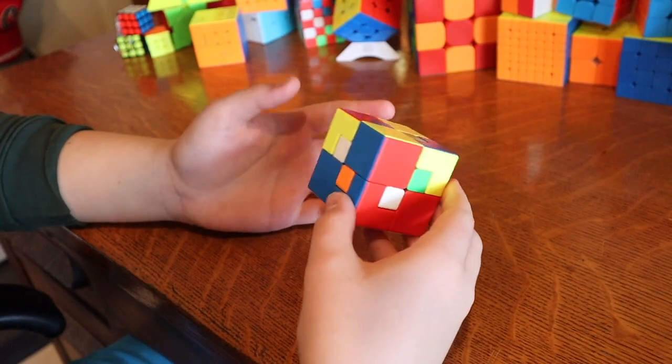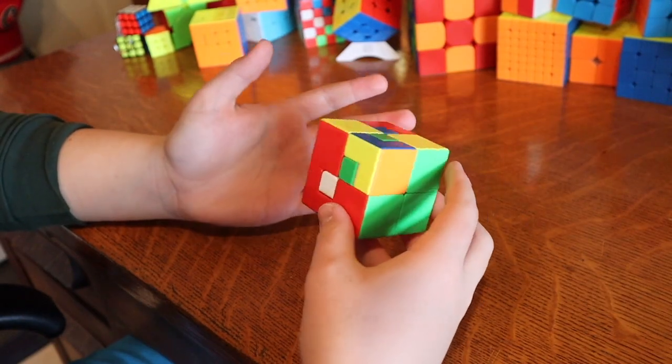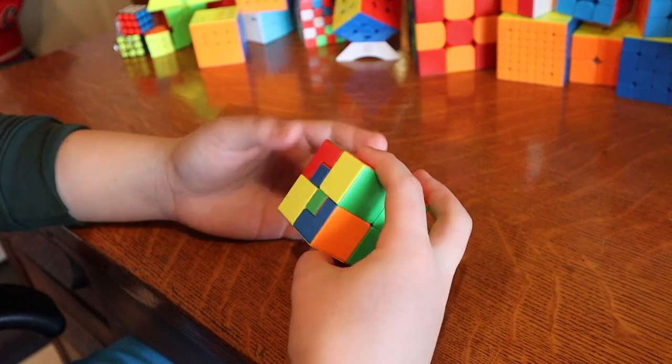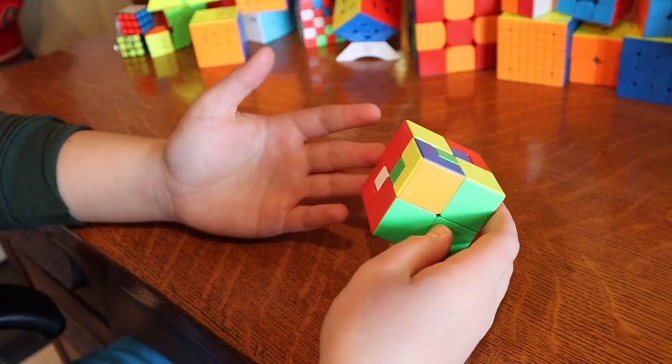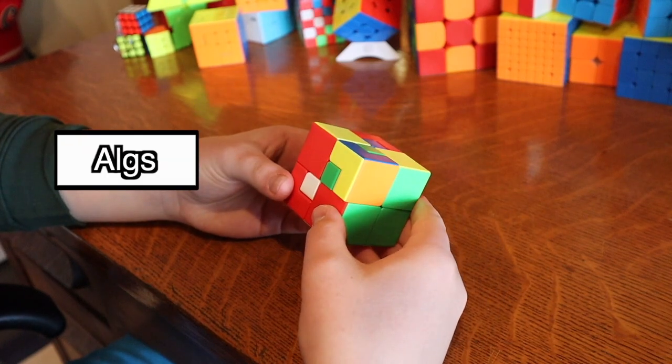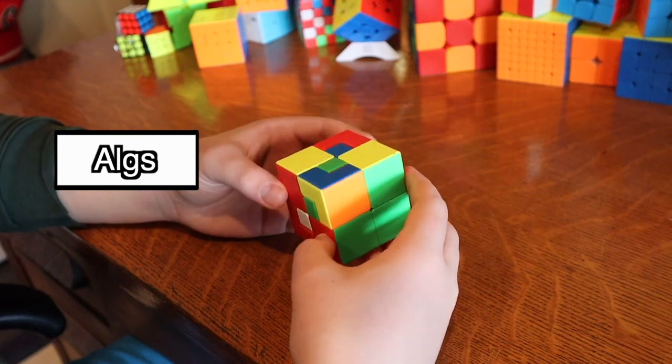Alright, so somehow I just put it back into a cube shape. I have no idea how, I didn't follow any algorithms, it just happened. And now I know that there are actually algorithms for this cube and I can assure you that I'll never learn them.